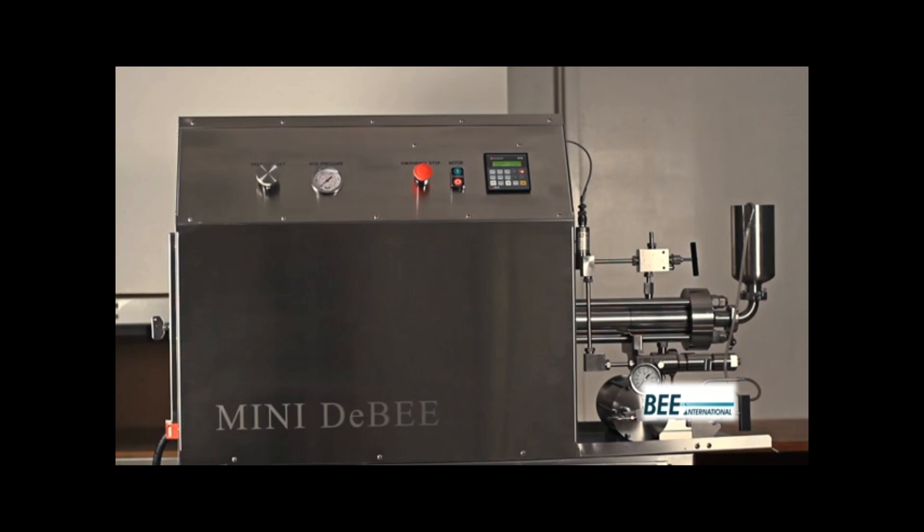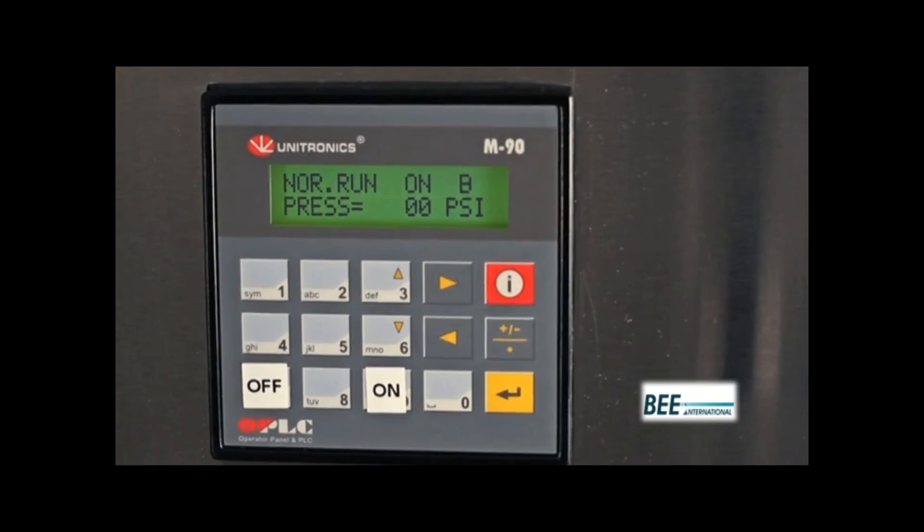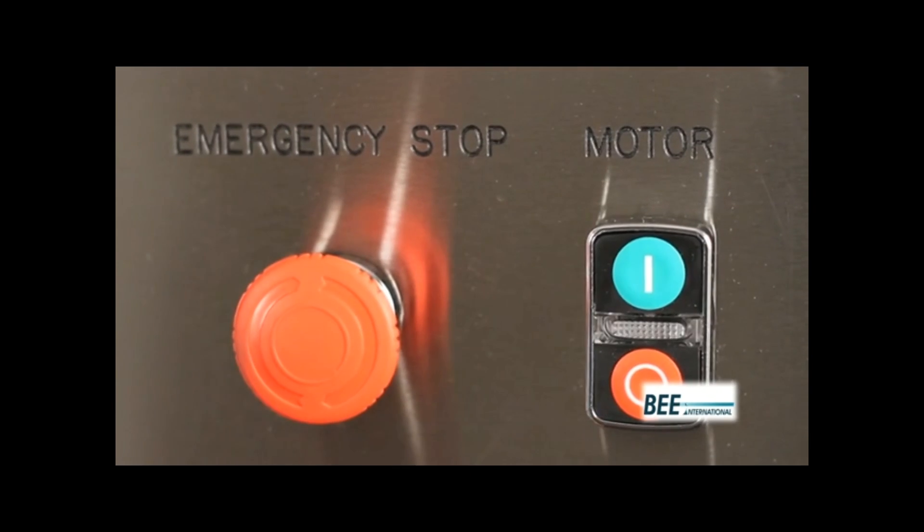At the end of operation, turn the pressure set dial counter-clockwise until process pressure reads zero and press off on the PLC to turn off the intensifier pump. Turn off the motor button.